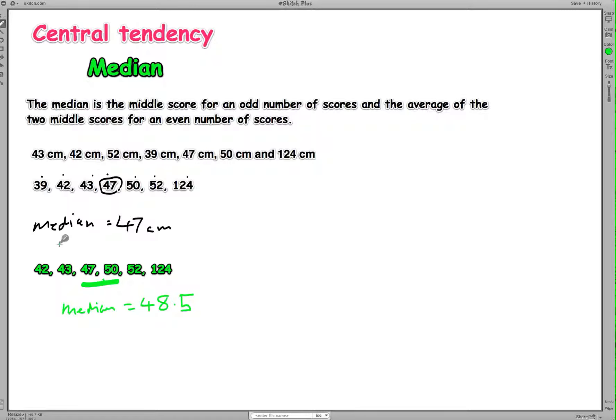So just to recap, what I did there, because the number of scores we had here was 6, and that's an even number, what we have to do is we need to find the average of the two middle scores, add them together, divide by 2, and that'll give us the median of the even number. So you can see that the median numbers are quite similar here.